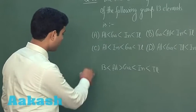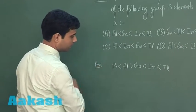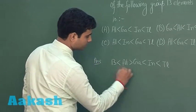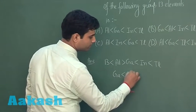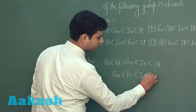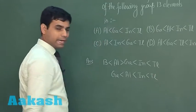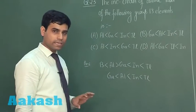The correct order for the sizes are gallium has the least size, then we have aluminum, then indium and thallium. If I write their atomic radii in picometer,